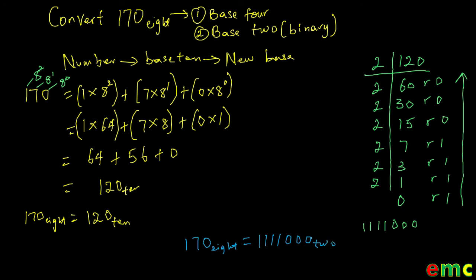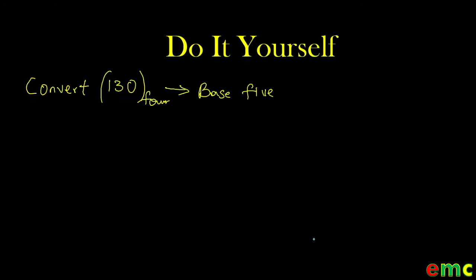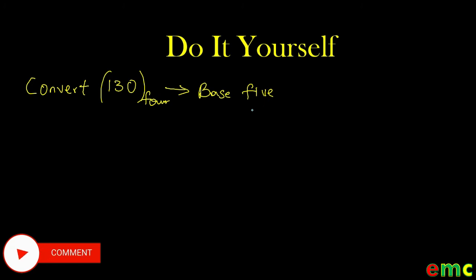In today's edition of Do It Yourself, convert 130 from base 4 to a number in base 5. That means you first convert 130 from base 4 to base 10, and then convert your answer from base 10 to base 5. Do your conversion and share your answer in the comment section below. Don't forget to hit the subscribe button and turn on notifications so that anytime a new video is uploaded, you will be notified. Thanks for watching — see you in our next video.